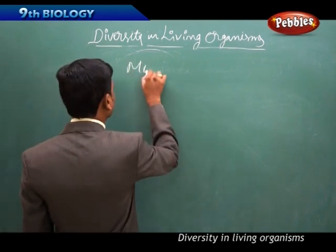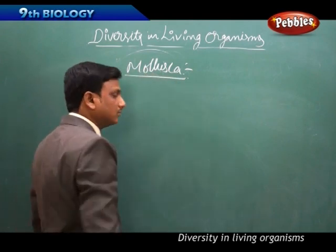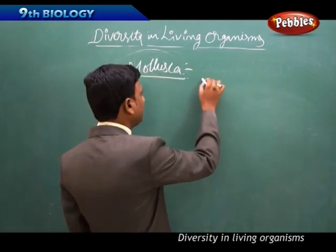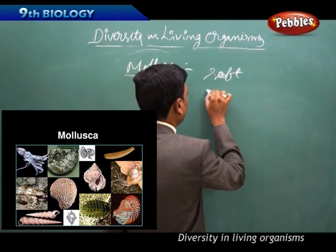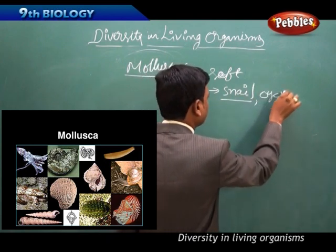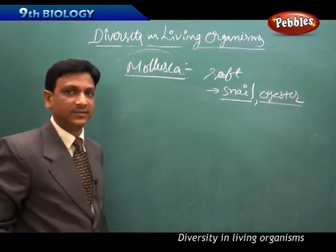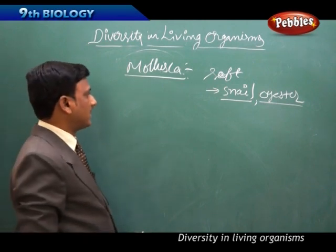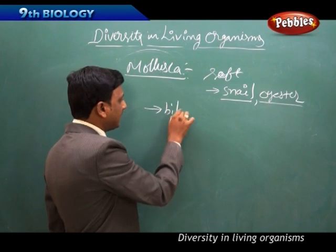The next phylum is Mollusca — soft-bodied organisms with very soft bodies. Examples include snails and oysters. Snails and oysters are smooth, soft animals. The snail shows bilateral symmetry — having two identical halves.